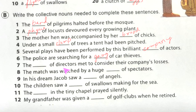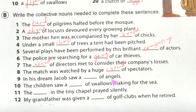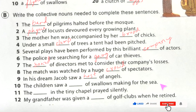Seven: 'The dash of directors considered their company's losses' — 'board,' because directors' collective noun is 'board.' Eight: 'The match was watched by a huge dash of spectators' — 'crowd,' as crowd is the collective noun for spectators. Nine: 'In his dream, Jacob saw a dash of angels' — 'host,' because angels' collective noun is 'host.' Ten: 'The children saw a dash of swallows making for the sea' — 'flight.'